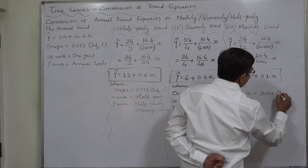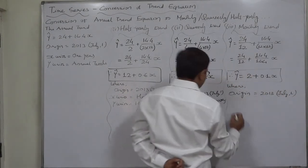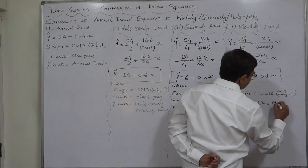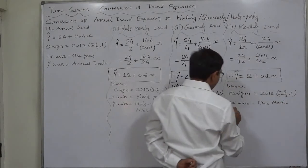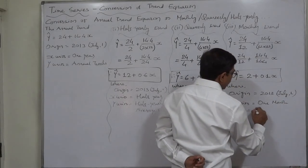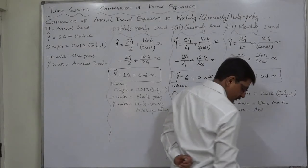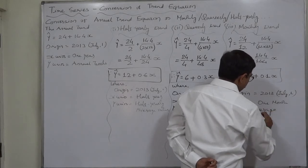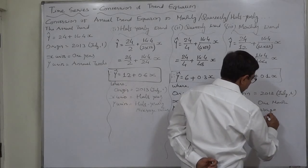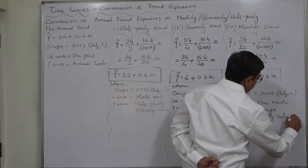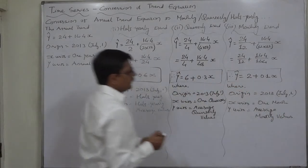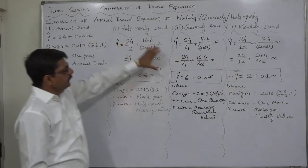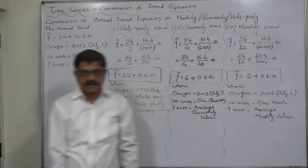The origin remains 2013 July 1, x units 1 month, and y units monthly average values. In this way we can convert an annual trend into a half-yearly trend, quarterly trend, and monthly trend. That's it, thank you very much for watching.